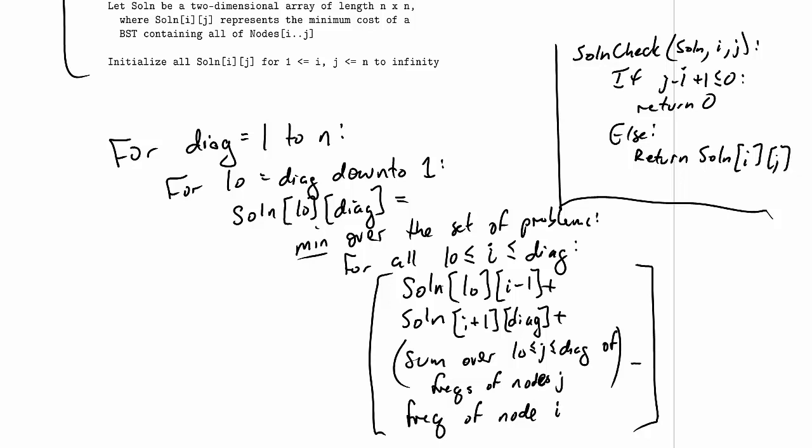So then I can just replace what I've done down here, indexing into solution, and instead of doing that, I will call solution check, and I'll pass it as parameters the indexes that I was going to use before. So this becomes solution check low i minus 1, and this becomes solution check i plus 1 and diag. Great.